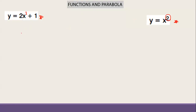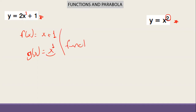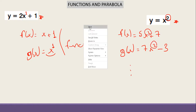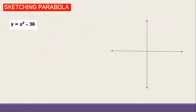For example, f(x) = x + 1 — anything with x to the power one is a function. On the other hand, f(x) = 5x² plus or minus something, or u(x) = 7x² - 3, these are going to be parabolas because of the power 2. So how do we draw graphs for parabolas?